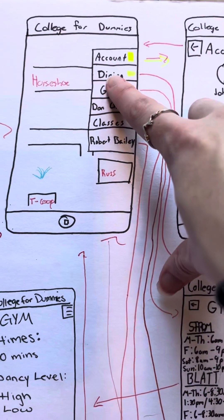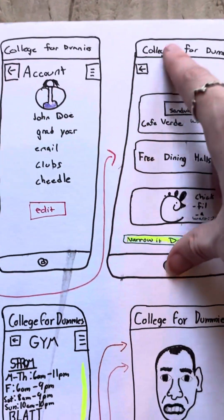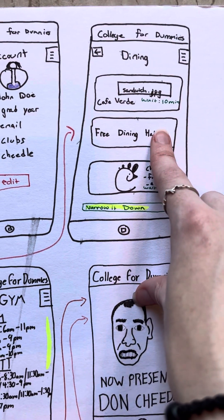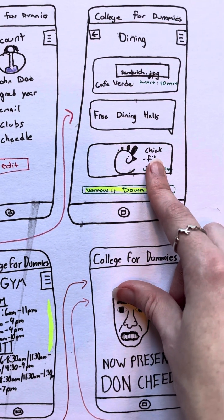From there, you can go back and select dining. Dining pulls up the dining app, where it shows you different types of foods you can eat. Here you can click on dining halls, and it'll give you a dropdown of those and the wait times as well.